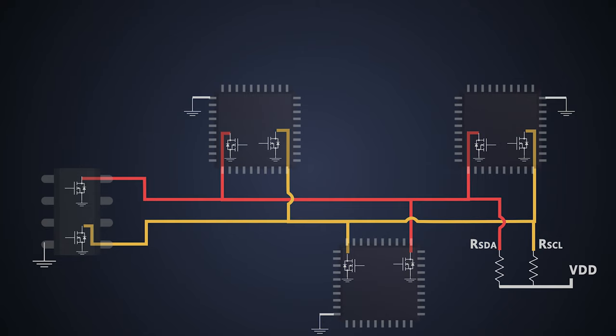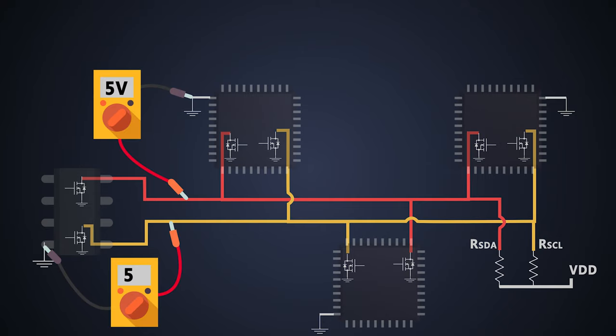When both SDA and SCL lines are at 5V, we can say the I2C bus is idle and there is no data transmission. When the devices need to talk, they pull these SDA lines to the ground which is known as logic level low by turning on this internal FET.